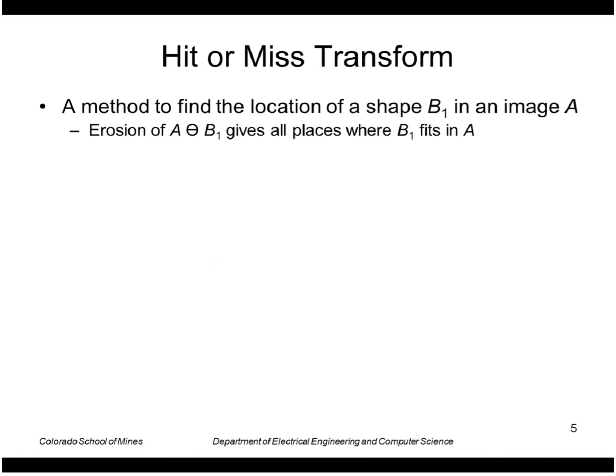The hit or miss transform is a way to find the location of a shape in an image. So we have a small binary image template called B1. If we were to take the erosion of A by B1, remember that's defined as shifting B1 all over the region A. Wherever it fits completely inside A we mark a 1 at that location. So those places indicate the presence of that template.